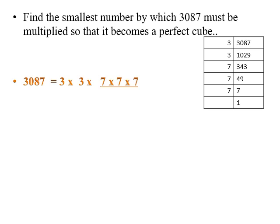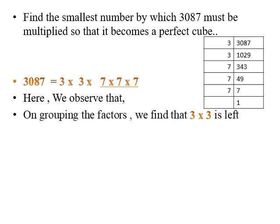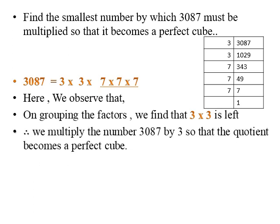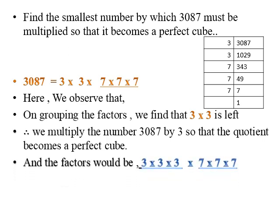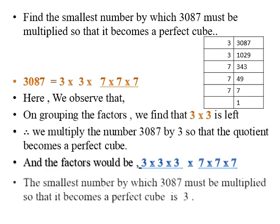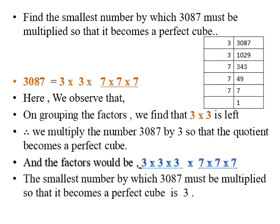We need one more 3 so that it will become a perfect cube. On grouping the factors, we find that 3 × 3 is left unpaired. So when we multiply 3807 by 3, it forms a complete group of 3. Therefore, the factors become 3 × 3 × 3 multiplied by 7 × 7 × 7. The smallest number by which 3807 must be multiplied to become a perfect cube is 3.